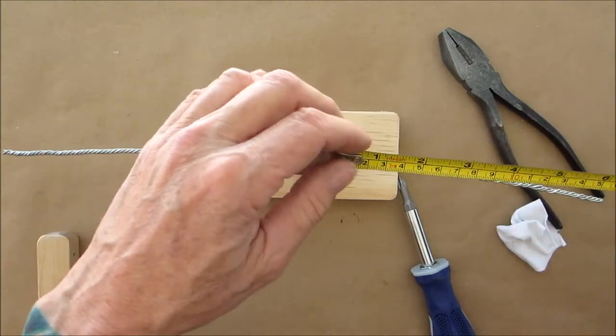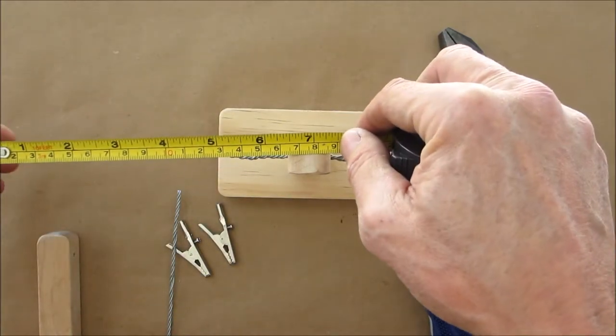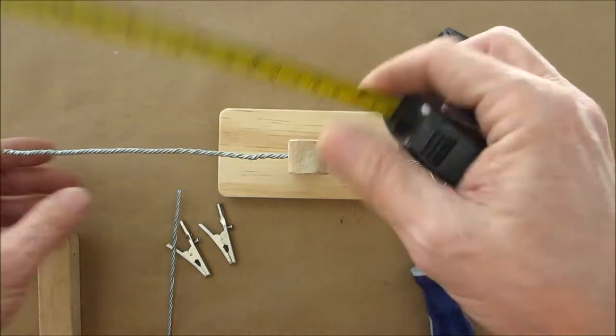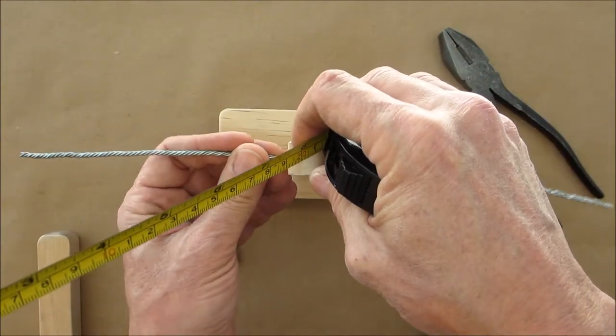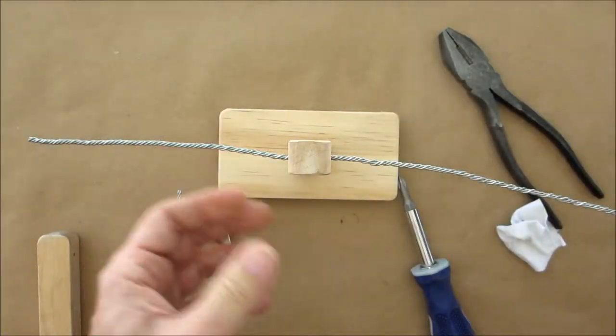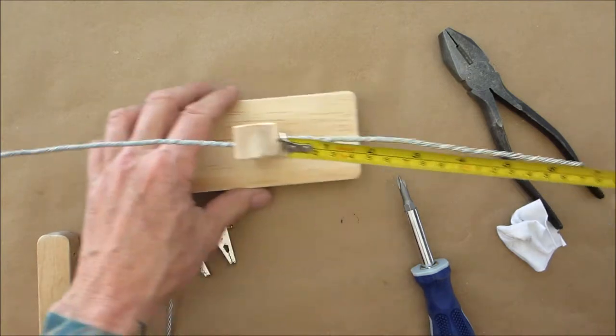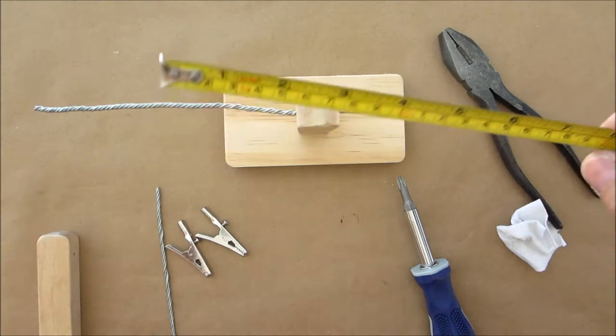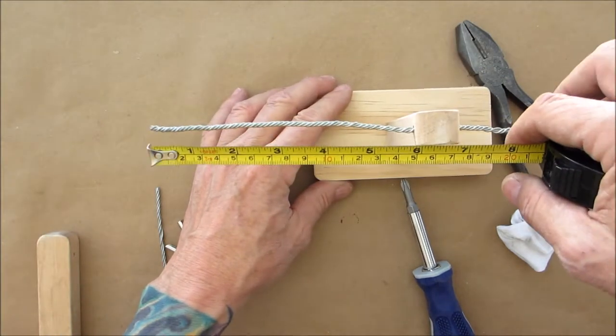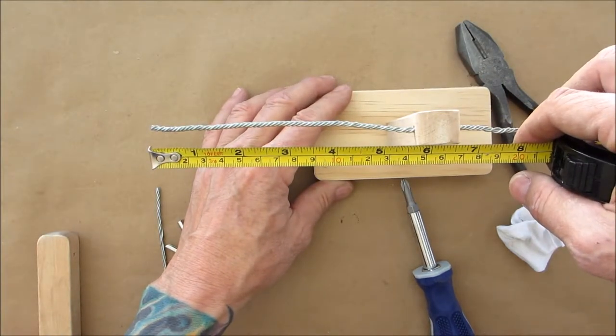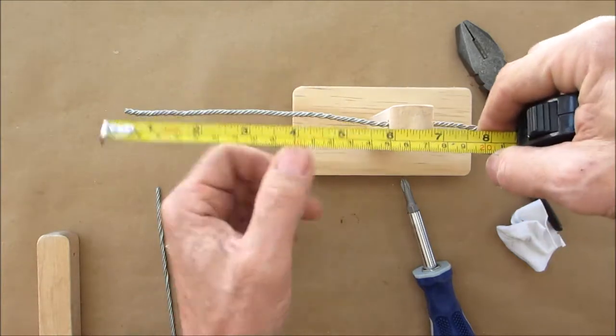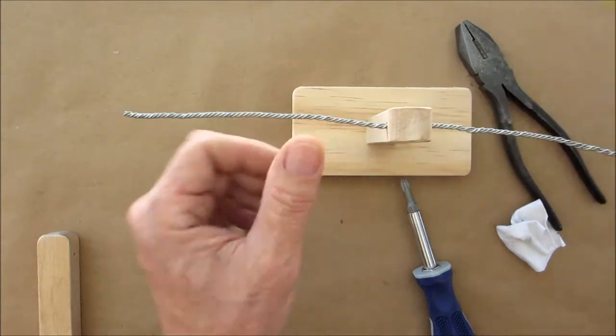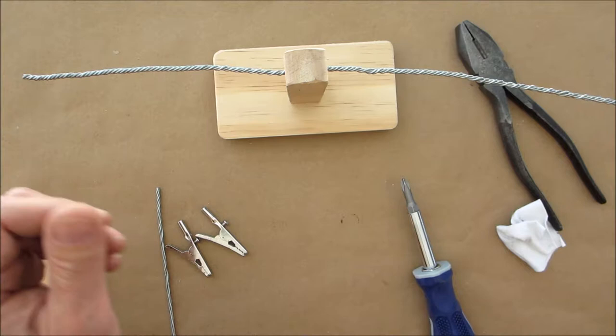So grab ourselves a little tape measure. We got six inches on that side and a little over six and a quarter on that side. So what we're going to do is pull this through a little bit. Okay, so we have six and three quarters sticking out on that side, and we have five and three quarters sticking out on that side, and this piece here is just about an inch. So that's perfect.